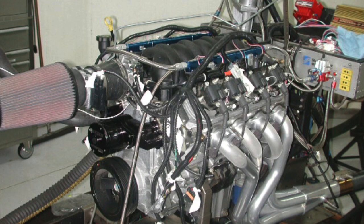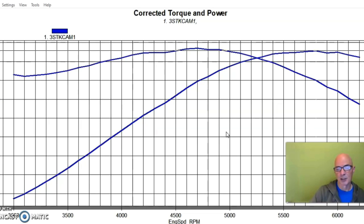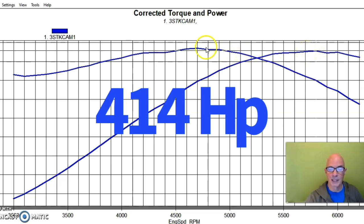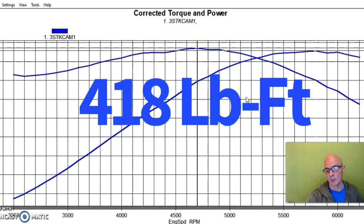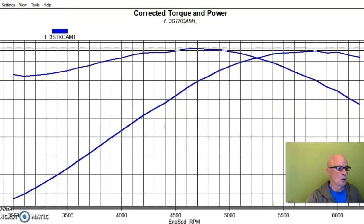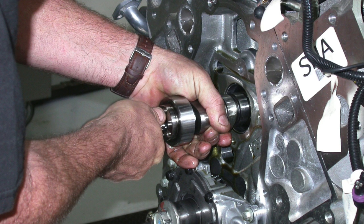It had the stock cam, stock heads, stock rockers, basically stock crate motor. It had no accessories on it, it had an open throttle body, obviously it had headers on and the tune was optimized, which is why this thing makes more than the rated 345 horsepower. Running in this manner after an optimized tune and run on just pump 91 that we had here in California, this made 414 horsepower and 418 foot-pounds of torque.